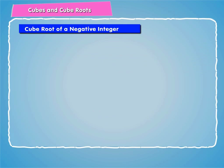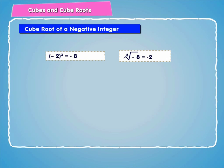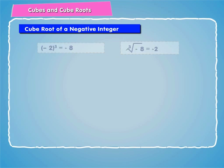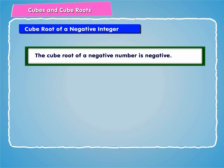Let us now learn about cube root of a negative integer. As we know that minus 2 cubed is equal to minus 8, therefore the cube root of minus 8 is equal to minus 2. Thus, the cube root of a negative number is negative.